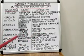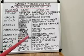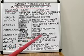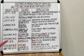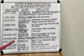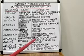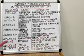Gluconic acid is obtained from Acetobacter and other bacteria and Penicillium the fungus, and is used as calcium gluconate to treat calcium deficiencies. Itaconic acid is obtained from Aspergillus and is used in the manufacture of acrylic resins.